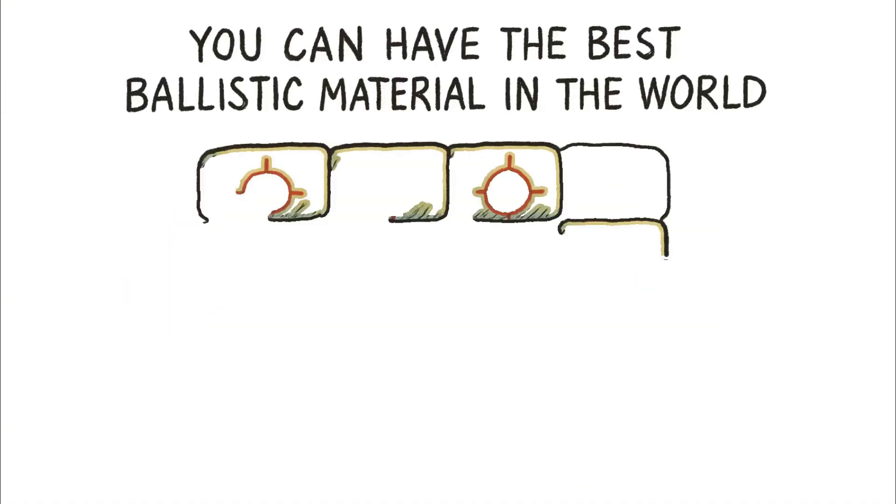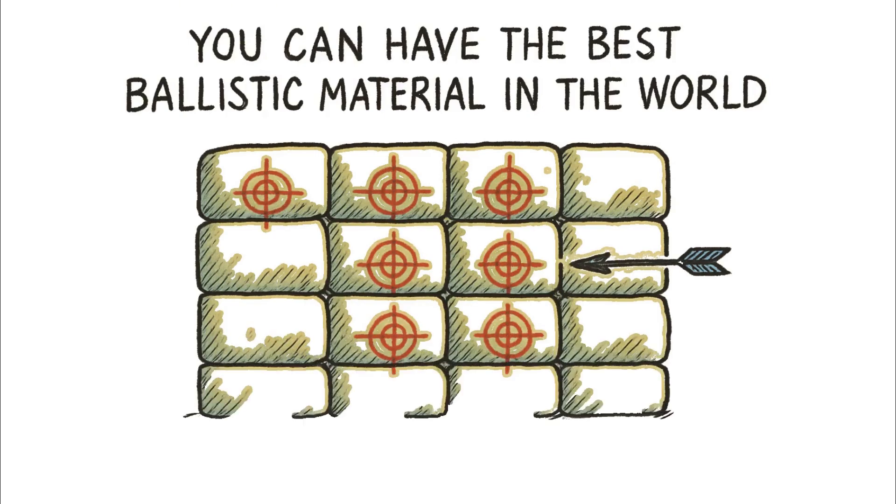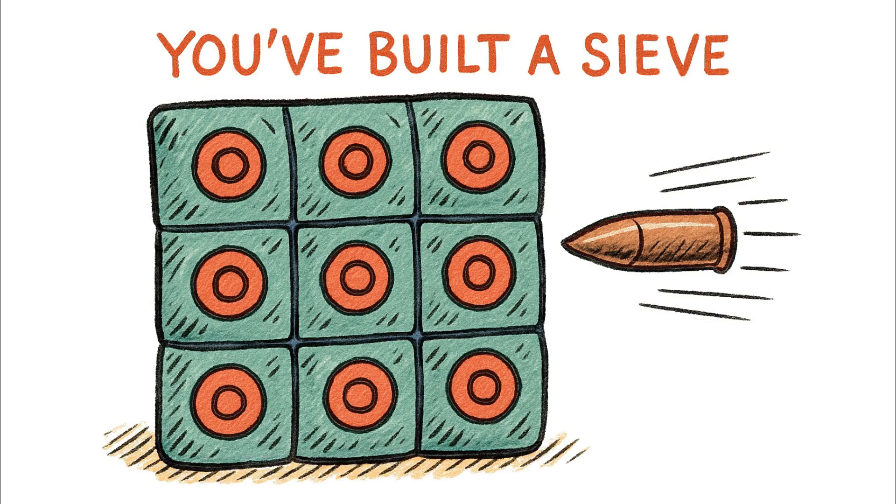You can have a wall made of the best ballistic material in the world, but if you assemble it into a grid of weak points, you haven't built a barrier. You've built a sieve, and you've basically given your opponent a set of invisible bullseyes to aim for.